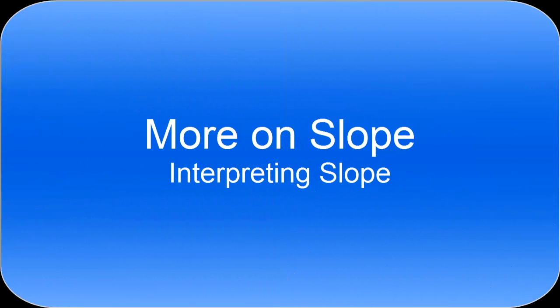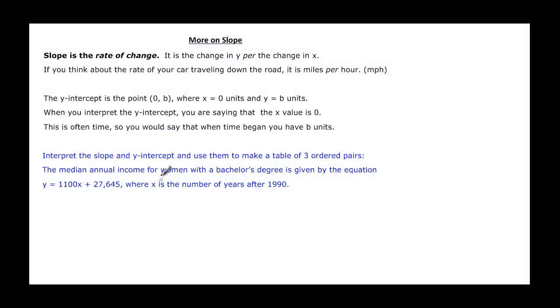This video is going to talk more about slope and interpreting slope. So slope is the rate of change. It is the change in y per the change in x, and if you just keep that in mind, the change in y per the change in x, that's really the way that you interpret it. If you think about the rate of your car traveling down a road, it is miles per hour.